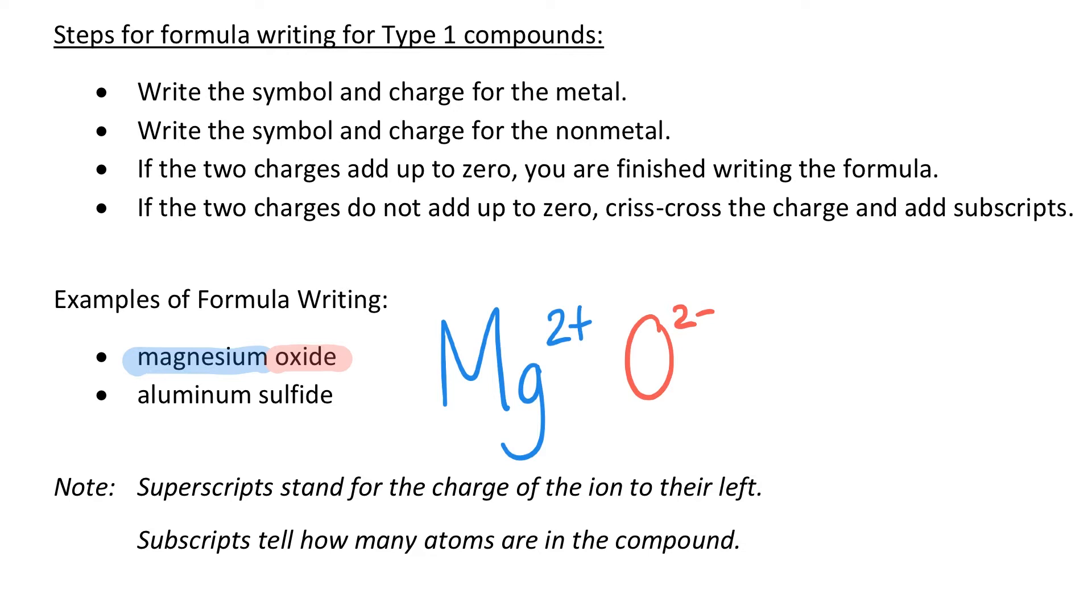And you can see here that step three says if the two charges add up to zero, and we're talking about these being our two charges. So I can show that work over here. +2 plus -2, those do equal zero, so that's true. Then you're finished writing the formula. And we would write the correct formula out for magnesium oxide as MgO, and we'd be done.